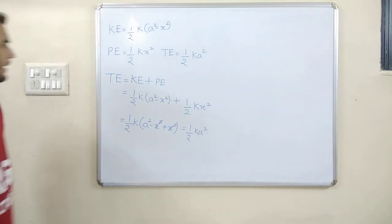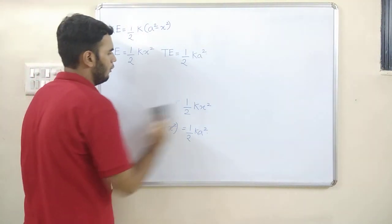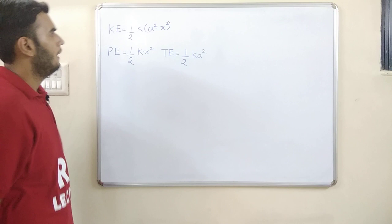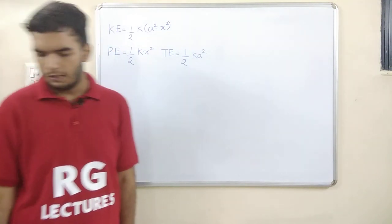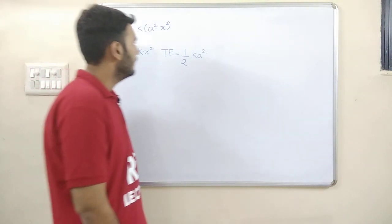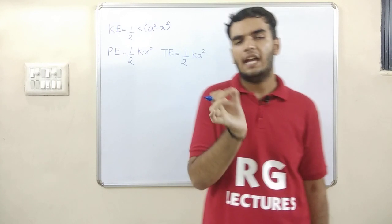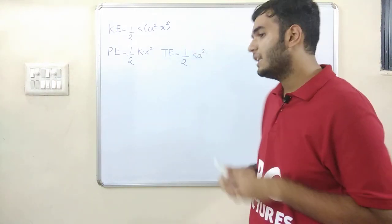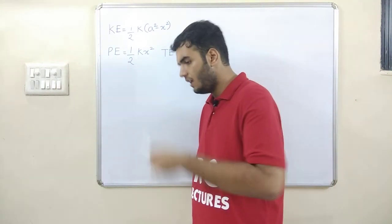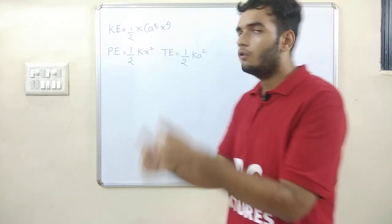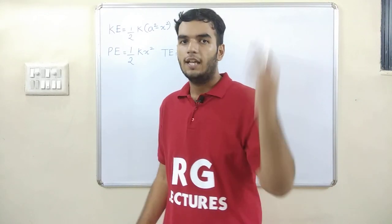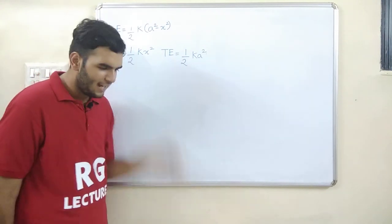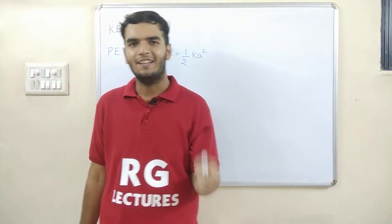So those are the three formulas for the energy of a particle performing SHM. In the next video we will see how energy is conserved in SHM — at the mean position and at the extreme position. See you soon in my next video. Share this video as much as possible, and do tell me whether English or Hindi is better.